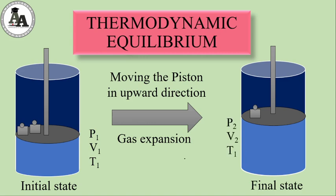But when this piston gets stopped and becomes motionless, at that time we can define its pressure, its volume, and its temperature. Initial state se final state mein — yahan bhi piston motionless tha, yahaan bhi piston motionless hai. Dono jagah gas ka pressure, volume aur temperature define ho raha hai. In dono states mein state functions vary nahi kar rahe.